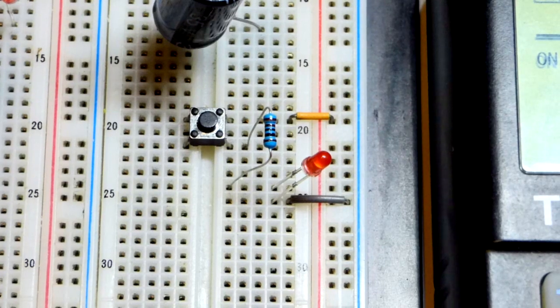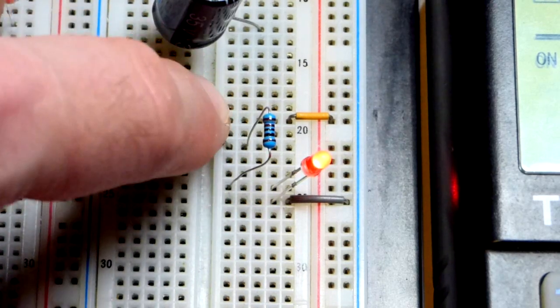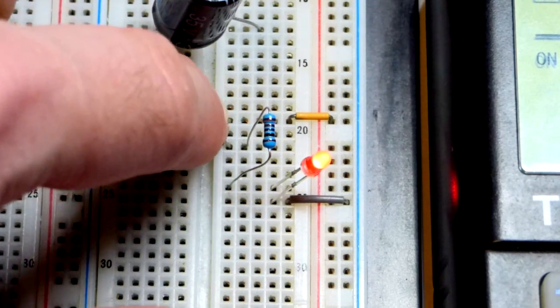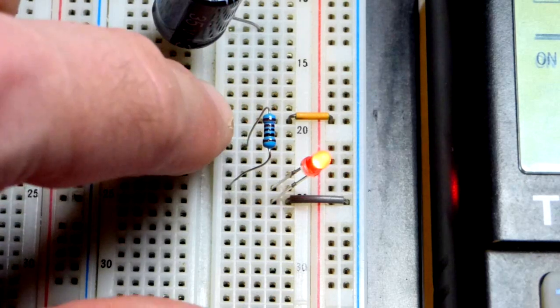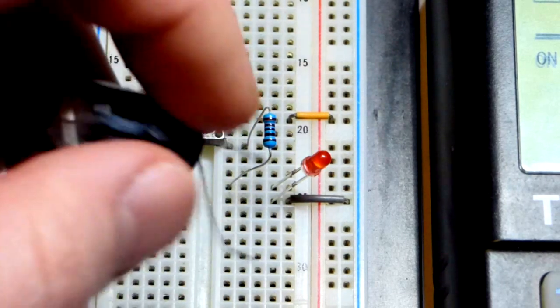And so here's the circuit on the breadboard right there. You can see that the LED, which is forward biased, it's in the direction to conduct. It goes out as soon as I release the button.